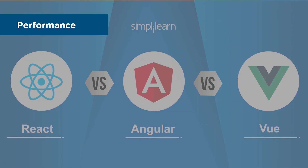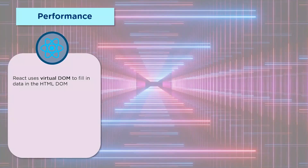Moving on, we have performance — a very crucial feature. When you build an HTML view and render it into the browser, internally the code is converted into a balanced tree structure. This B-tree algorithm is extremely fast, so when the user makes any changes to the UI, the changes are reflected immediately, improving performance.